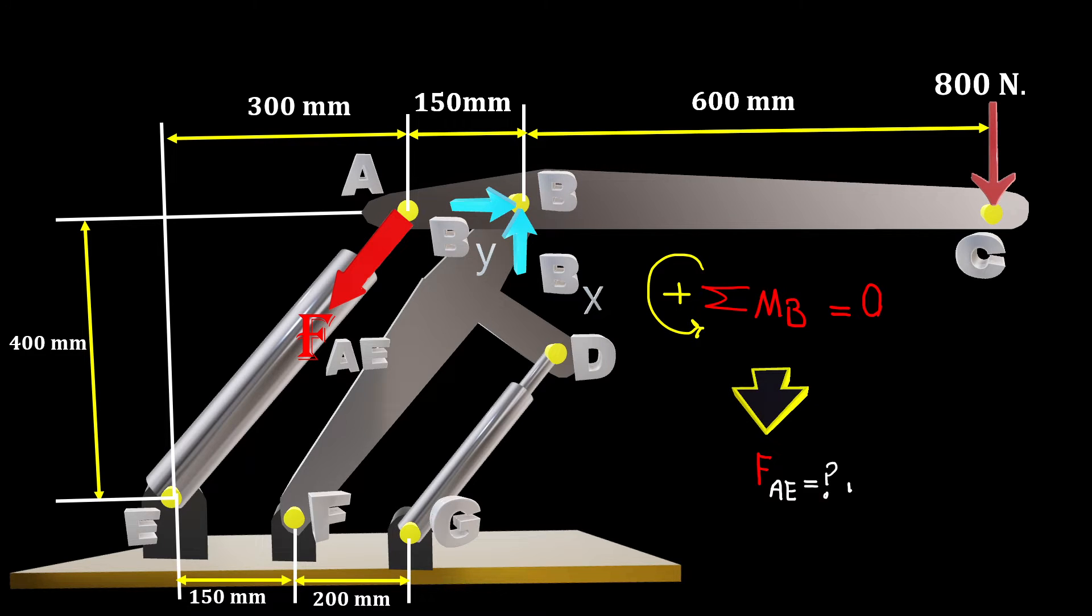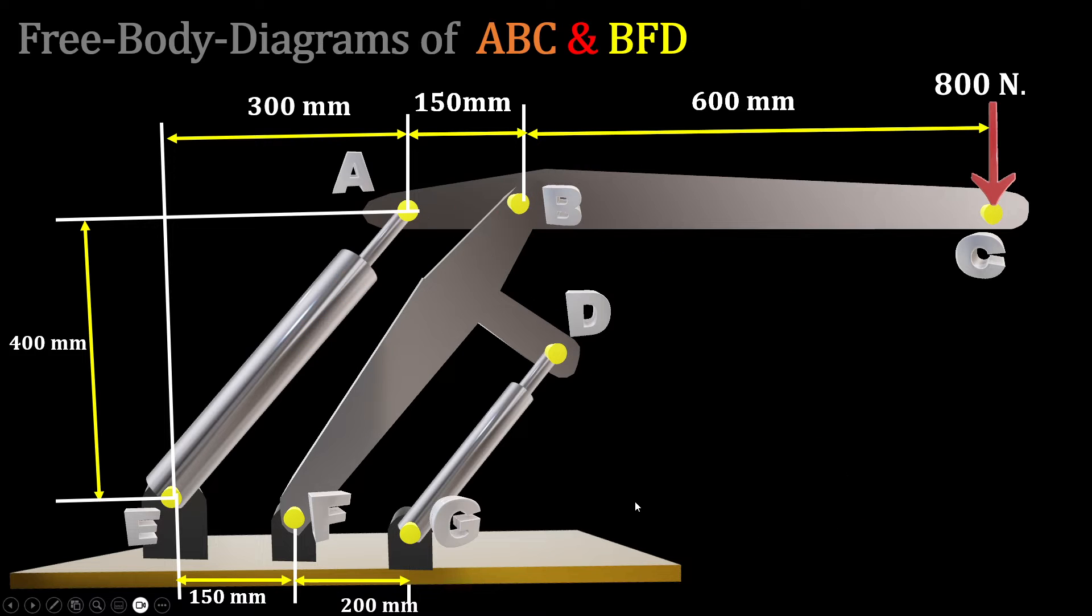So if we have only this part and jot down the forces, summation of moment about point B, then FAE is calculated.